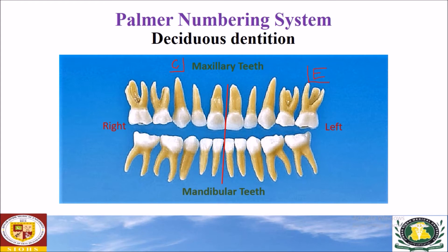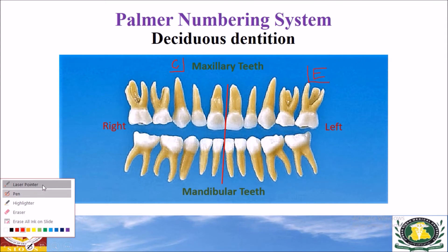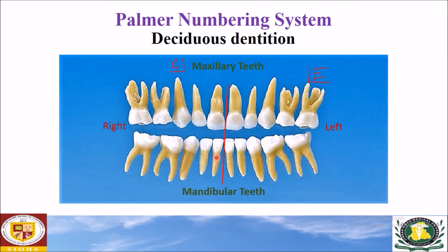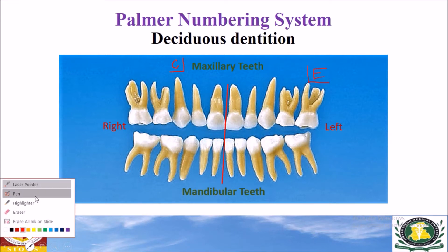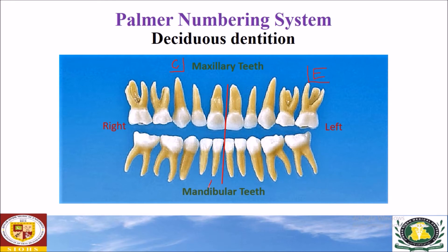For the mandibular right central incisor, we use the alphabet A, which is used for all central incisors. In order to distinguish it from the other central incisors, we use a symbol that indicates the mandibular arch teeth of the right side.